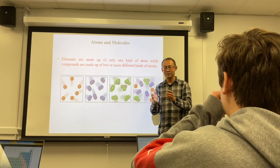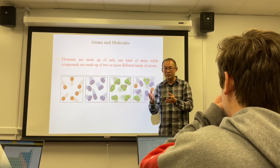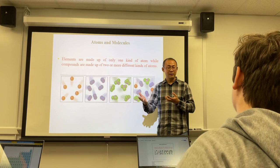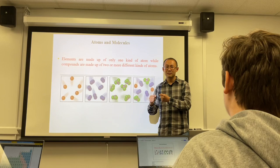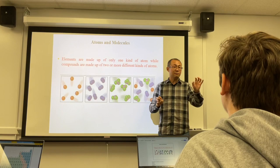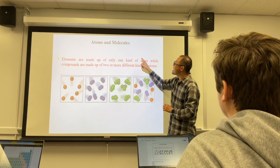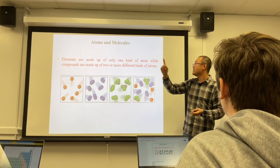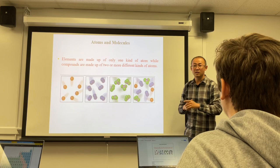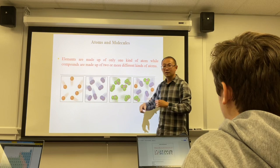An element is a pure substance that cannot be chemically decomposed — it is composed of only one type of atom. A compound is a pure substance composed of two or more types of atoms (two or more elements). One element means one kind of atom; compounds are made of two or more types of atoms in a fixed chemical combination.